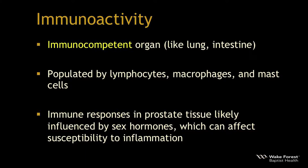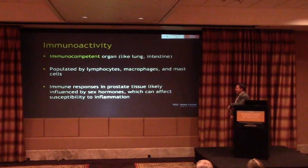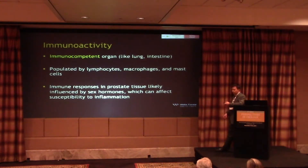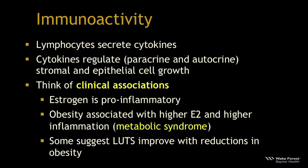The prostate, similar to the lung and intestine, is an immunocompetent organ populated by lymphocytes, macrophages, and mast cells. The immune responses in prostate tissue are likely influenced by sex hormones, which can affect susceptibility to inflammation. Lymphocytes secrete cytokines that regulate growth within both the stroma and epithelium through paracrine and autocrine mechanisms.